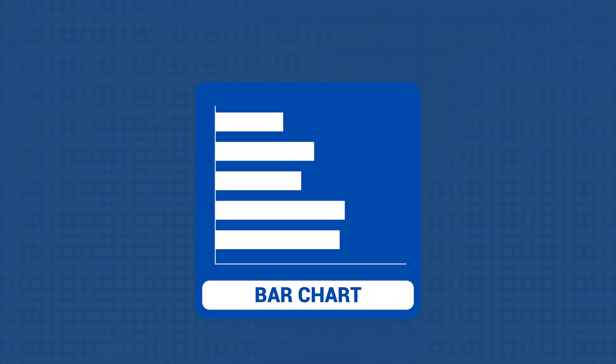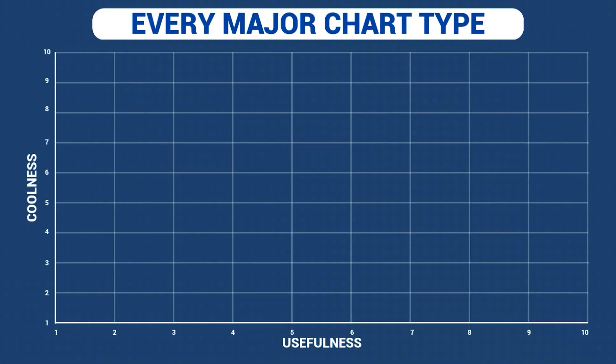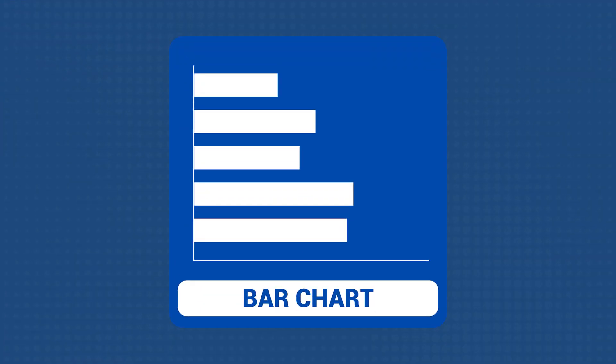Let's start with a basic bar chart and its cousin, the column chart or vertical bar chart. Both of these are great for comparing categories against each other, because you can easily compare the lengths of the bars without having to worry about any other dimensions. So if you wanted to show some kind of ranking, a bar chart would be perfect because even if the bars are close, it's clear which one's longer. Bar and column charts can be incredibly useful.